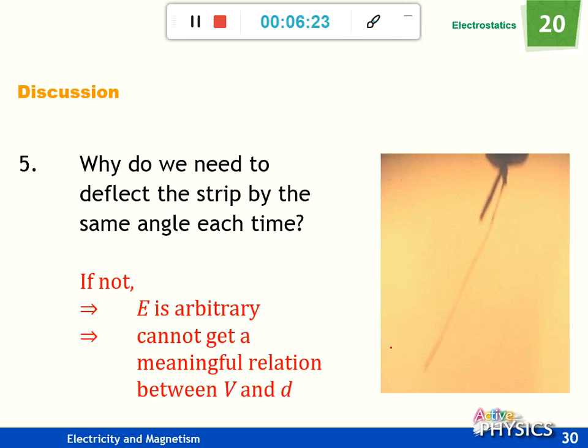Question 5: Why do we need to deflect the strap by the same angle each time? If not, it means E is arbitrary and we cannot get a meaningful relation between V and d. We want to keep this angle, maybe 30 degrees. If we put this strap to other places between the metal plates, you can find the same degree.